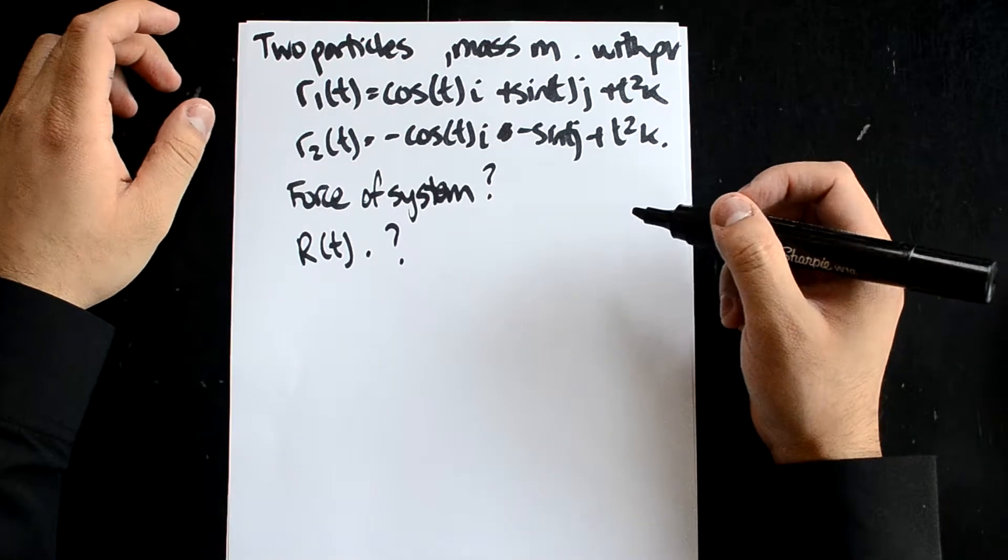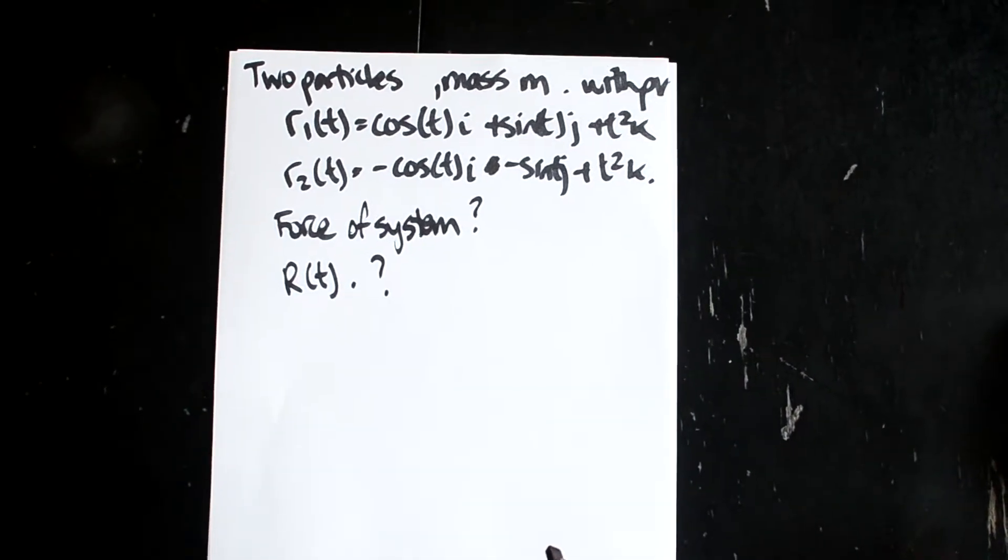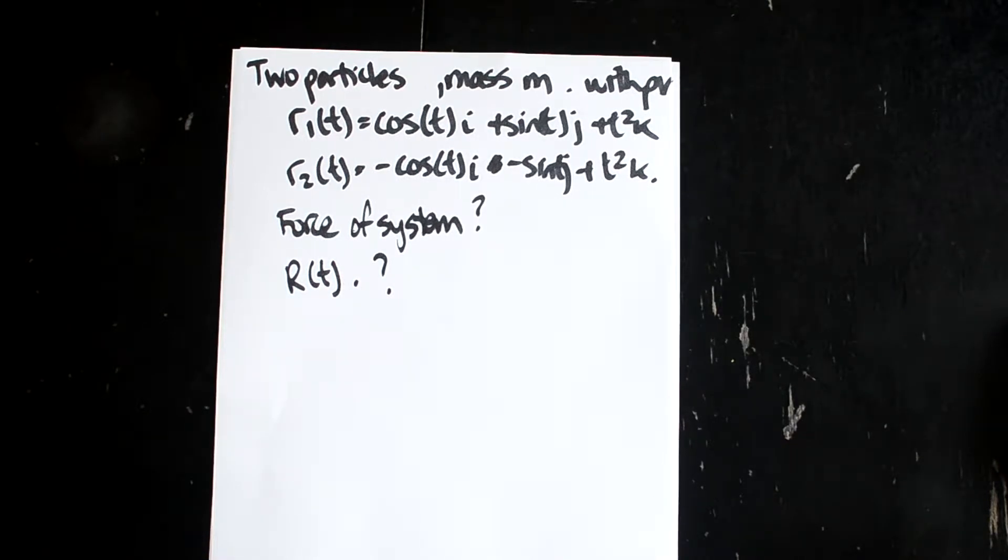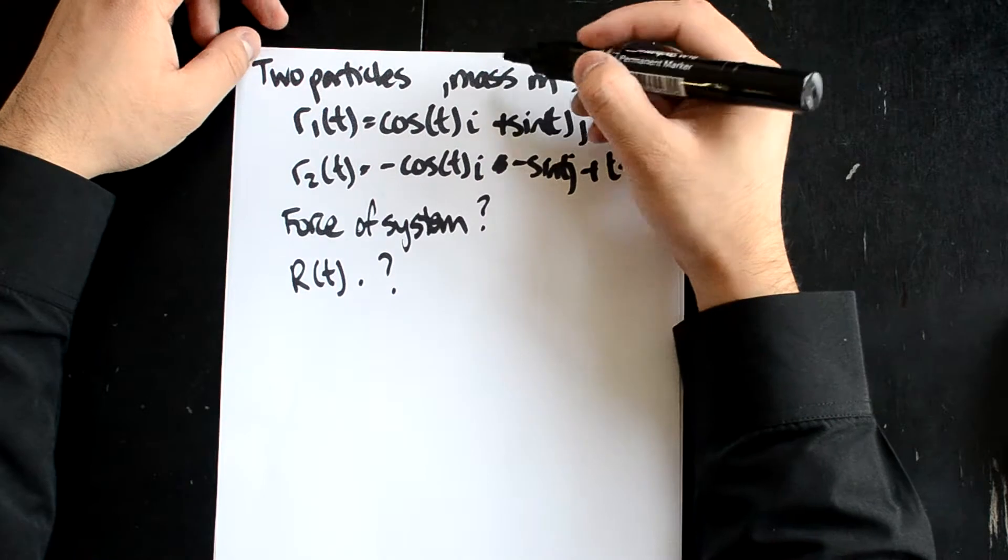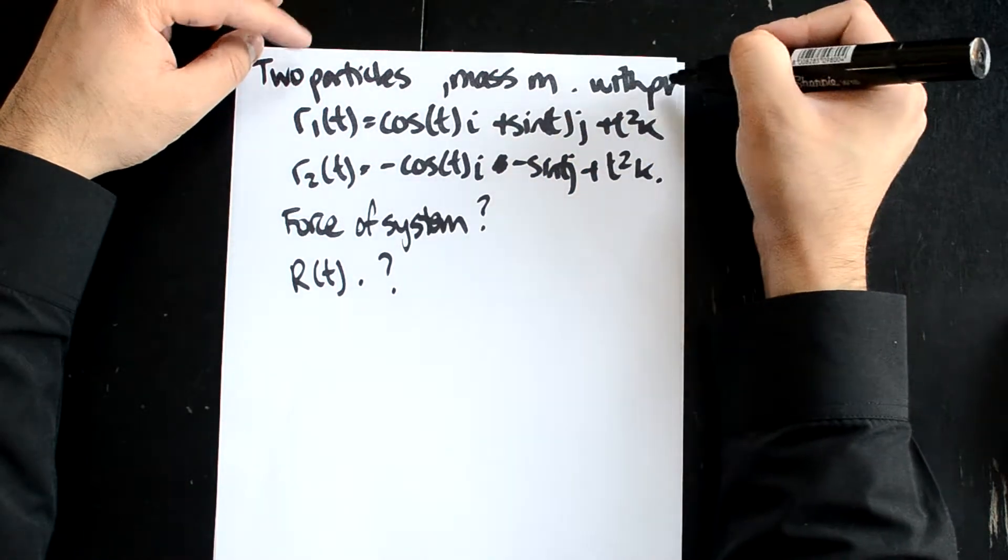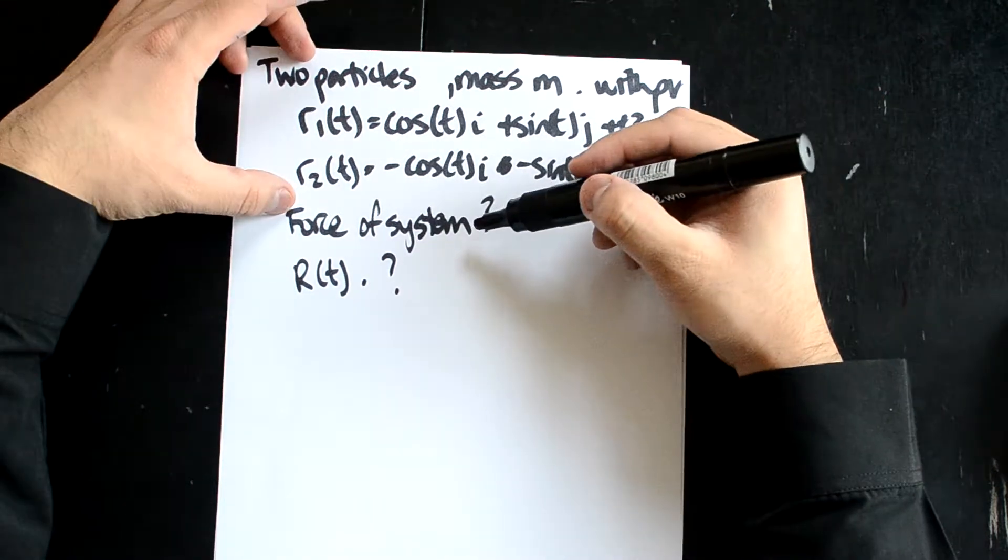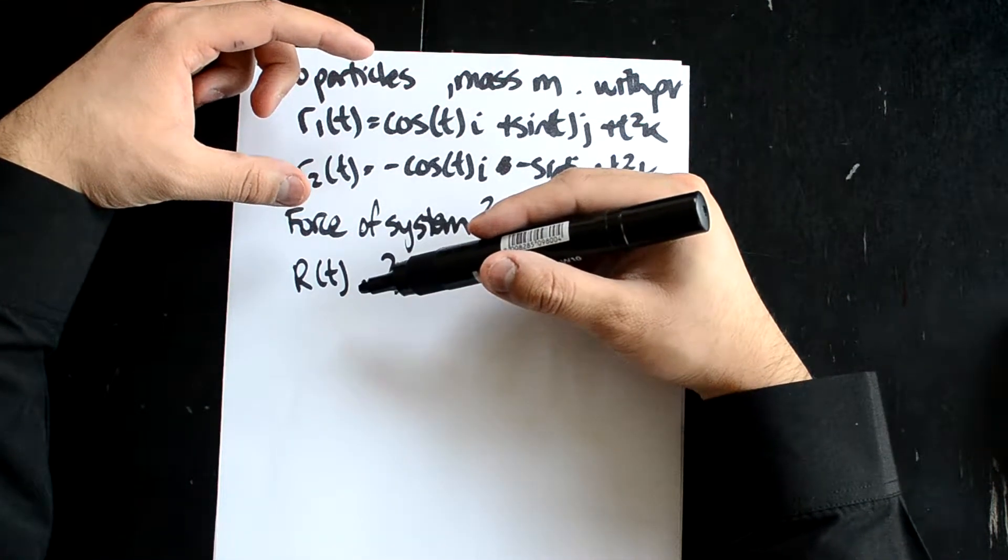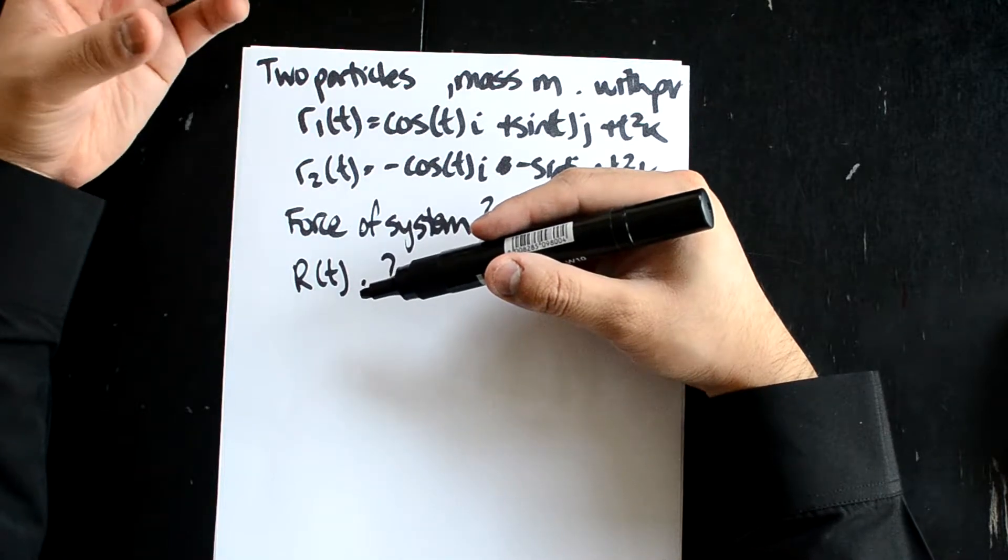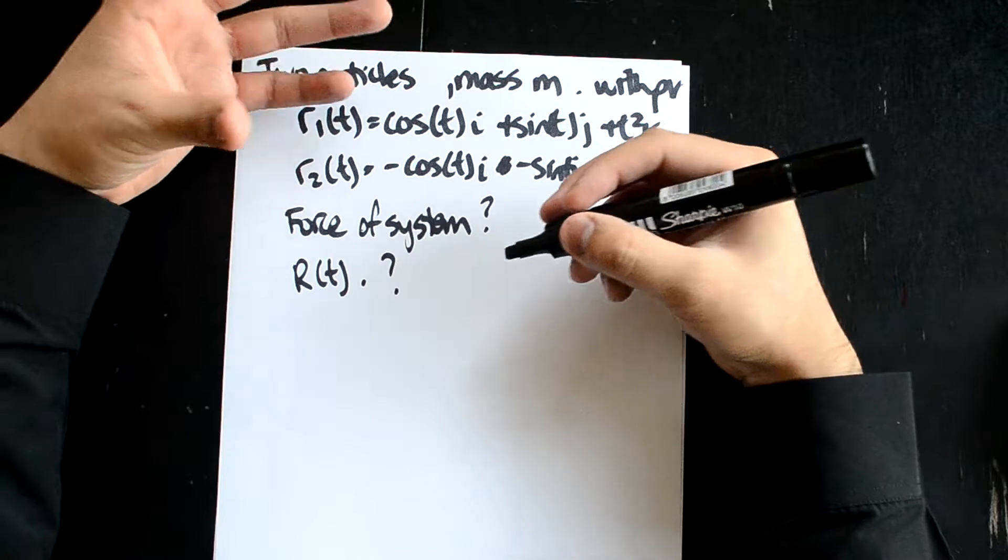In this question, you can see that we have two position vectors with two particles, mass M with position vector R1, R2. It's asking us to find the force of the system and RT, which is the position vector of the centre of the mass of the system as a function of time.